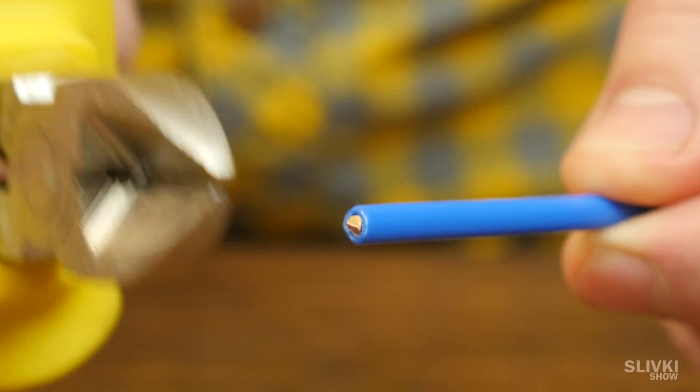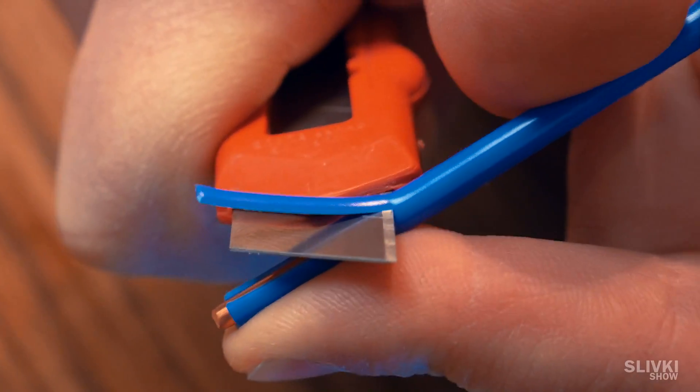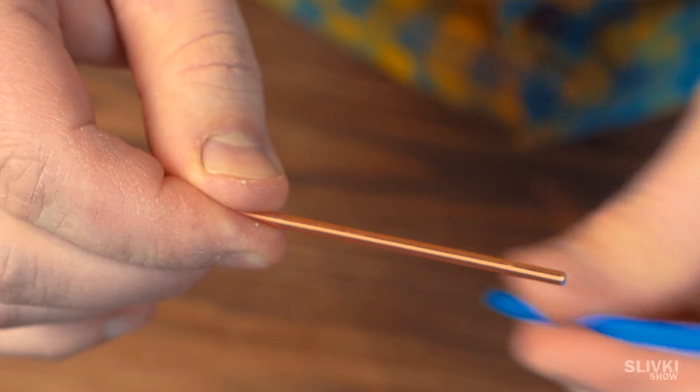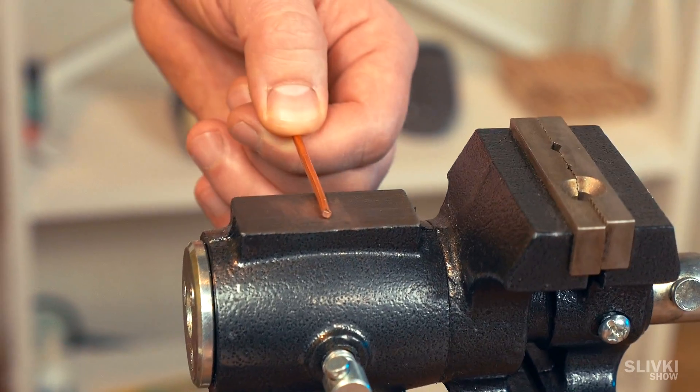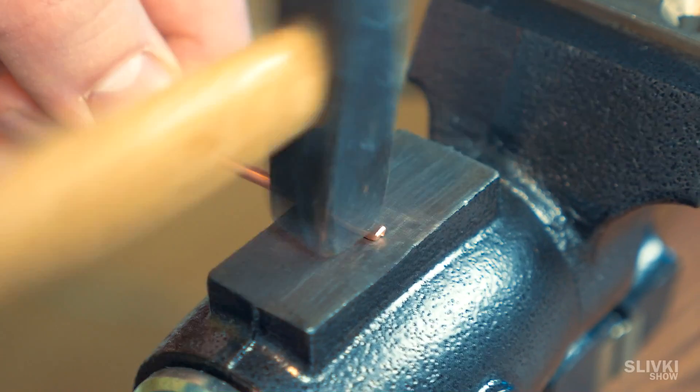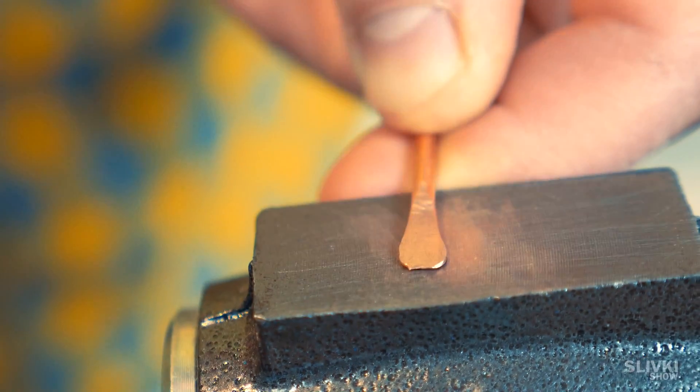We need to get a piece of wire which should be cleaned from insulation to get only copper. Then we flatten the tip a little bit with a hammer to get this needle.